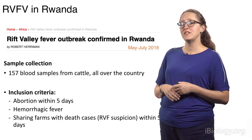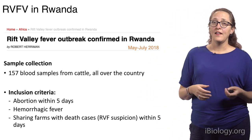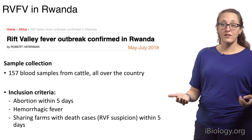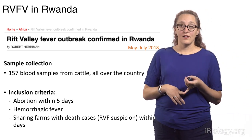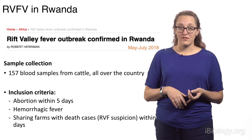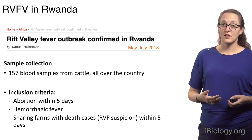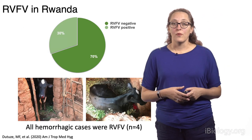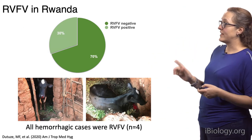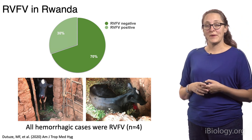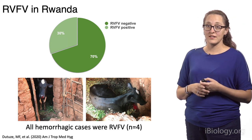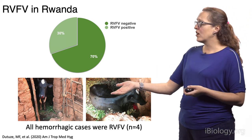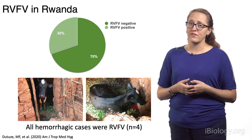We had 157 blood samples from cattle all over the country with suspected Rift Valley Fever. Inclusion criteria were: an abortion within five days, symptoms of hemorrhagic fever, or sharing a farm with a death case of Rift Valley Fever suspicion within the last five days. We found that 70% of the Rift Valley Fever suspected cases were actually negative, and only 30% were positive. Positivity was determined by regular PCR. All cases of hemorrhagic fever were indeed Rift Valley Fever.